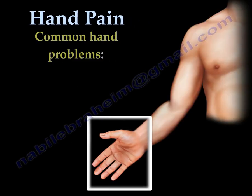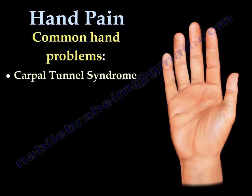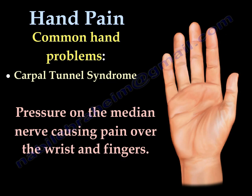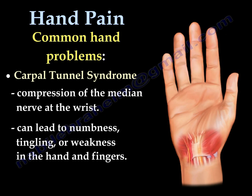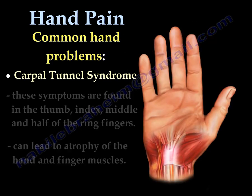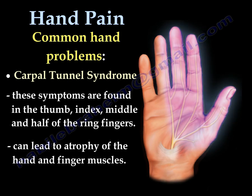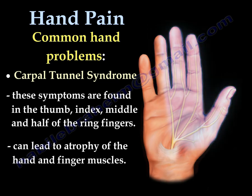Carpal Tunnel Syndrome involves pressure on the median nerve causing pain over the wrist and fingers. Compression of the median nerve at the wrist leads to numbness, tingling, or weakness in the hand and fingers. These symptoms are found in the thumb, index, middle, and half of the ring fingers. It can also lead to atrophy of the muscles of the hand and fingers.